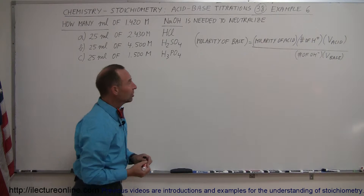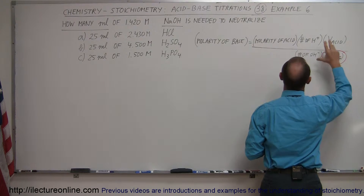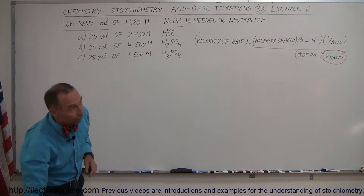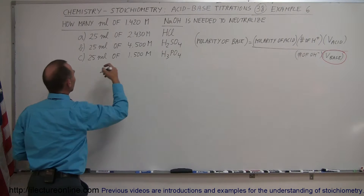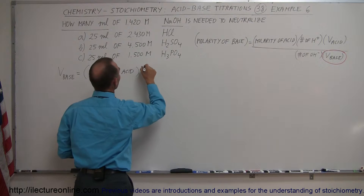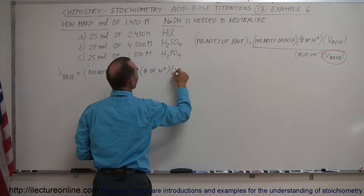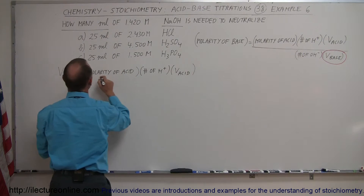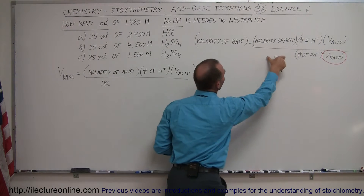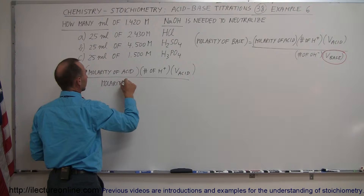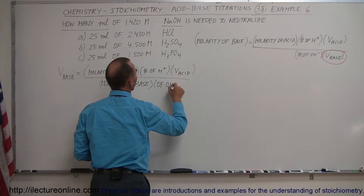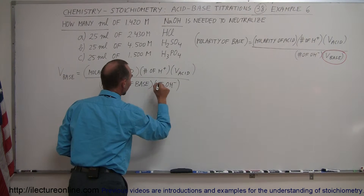What we're looking for is how many milliliters of the base, so we're solving for the volume of the base. We rearrange by moving the volume of the base up and the molarity of the base down. The volume of the base equals the molarity of the acid times the number of hydrogen ions produced per molecule, times the volume of the acid, divided by the molarity of the base times the number of hydroxide ions produced per molecule.